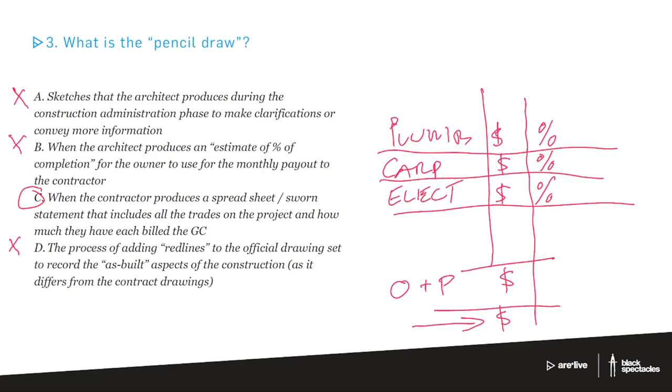So this is this great big document. It's got all of these different numbers in it, but it's the way that you keep track of the big numbers, but then also each trade and how much of work they've done up to that point. The reason it's called a pencil draw, it's because back in the day, you would literally do this in pencil. And then you'd meet at the site, everybody would talk about it, and you'd erase out the numbers that nobody could agree on, and you put new numbers in. So you did it in pencil, not in pen, in order to make it easy to have that be a conversation. Obviously, nobody does it in pencil anymore. It's all done on spreadsheets.